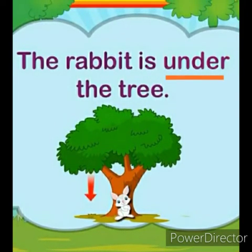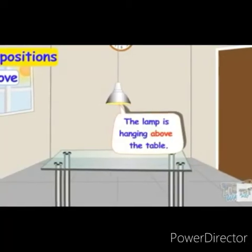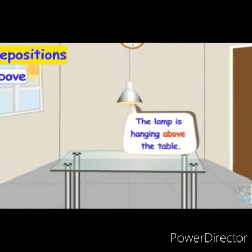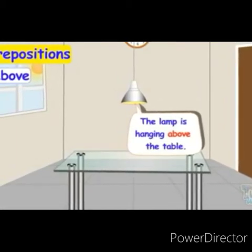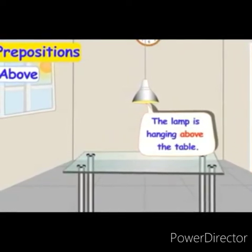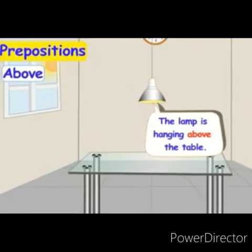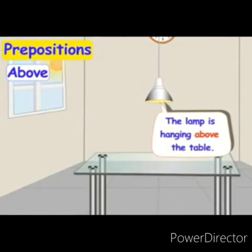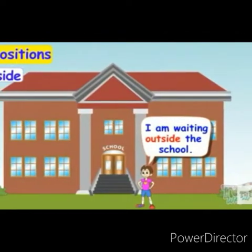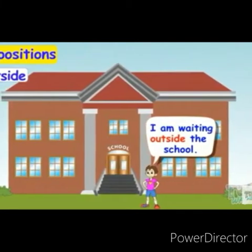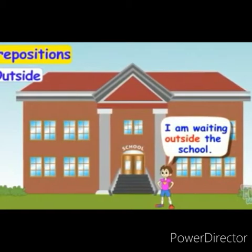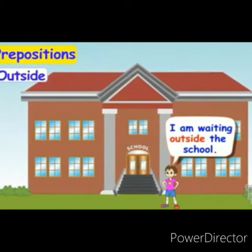Now we have a lamp hanging. How will you say the position? The lamp is hanging above the table — it is above. It is not on the table, it is hanging, it is fixed. So you will say above the table. And now: I am waiting outside the school, so where is he? Standing outside — it is telling the position where he is. If you are going inside, you say I am going inside the school. Inside. Outside.